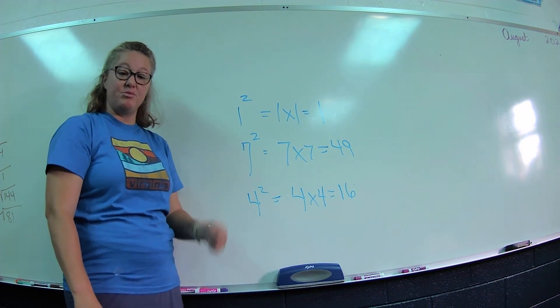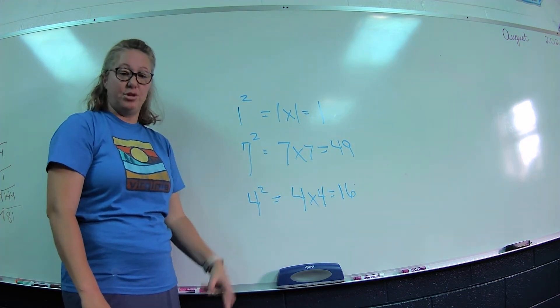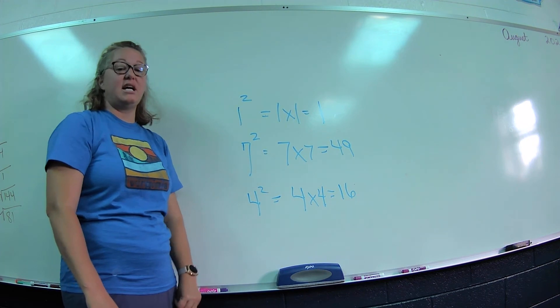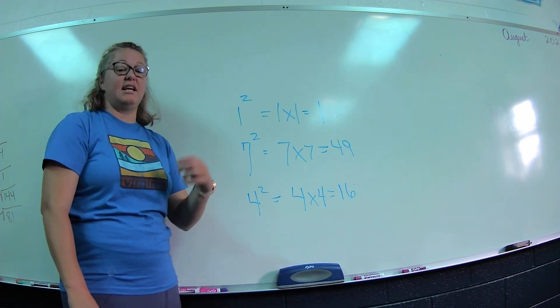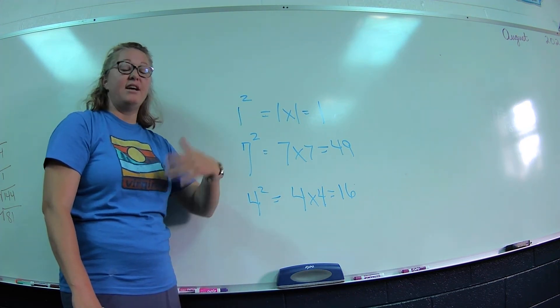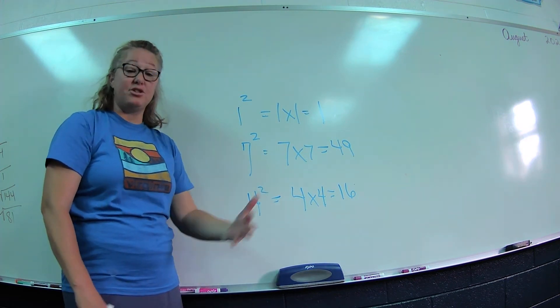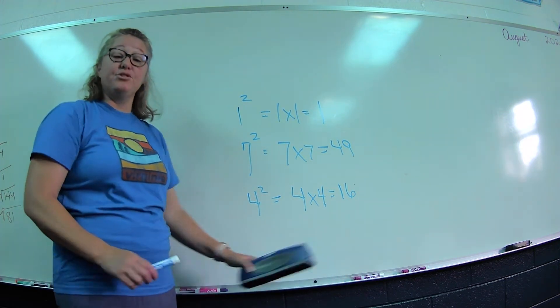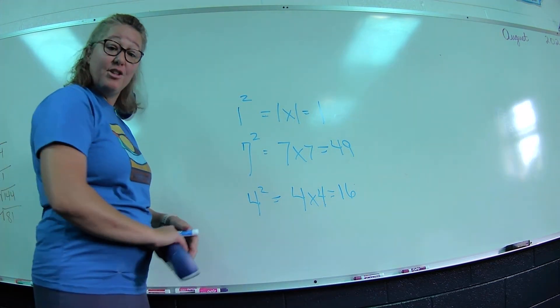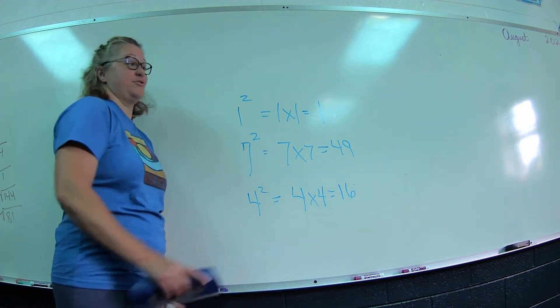Those are squared. 1 times 1 is 1, 2 times 2 is 4, 3 times 3 is 9, 4 times 4 is 16, 5 times 5 is 25, 6 times 6 is 36, 7 times 7 is 49, and so on. Know your doubles. Know your squares.